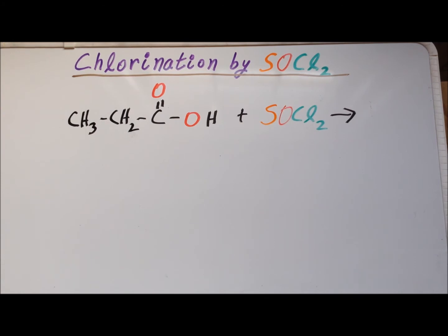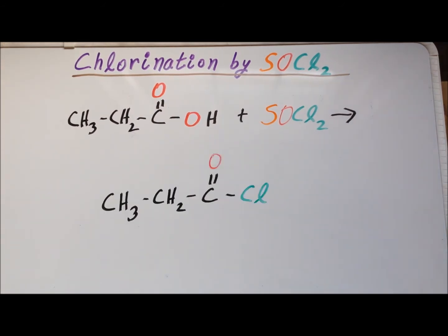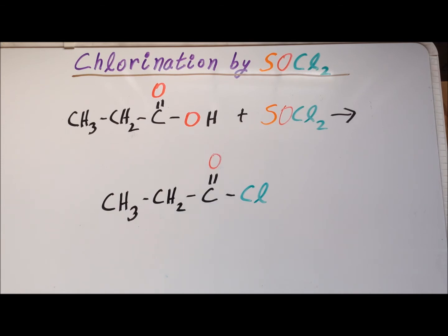For our penultimate, next-to-last example, we have the reaction of propionic acid with thionyl chloride in the presence of gentle heating. Our product is called propionyl chloride — it is the acid chloride derivative of propionic acid. Please see the following figures showing the computed structures for the reactants, products, and the two transition states.